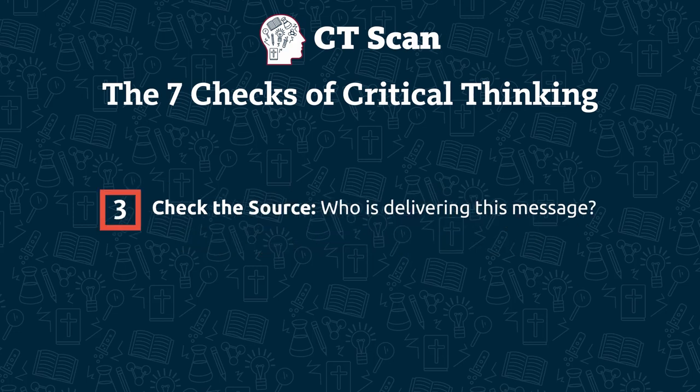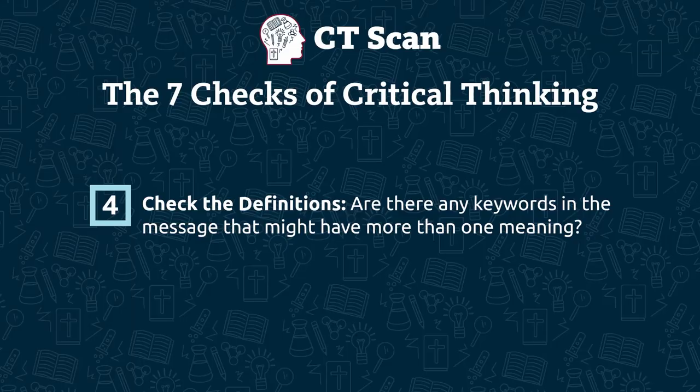For check number three, check the source: you'll notice that any claim about transitional fossils can't come from a source which starts with God's word as its absolute authority, because the word 'transitional' already takes for granted that evolution between kinds is happening. For check number four, check the definitions — some researchers recommend using the term 'intermediate form' instead, because it doesn't imply the same evolutionary assumptions that 'transitional forms' does.